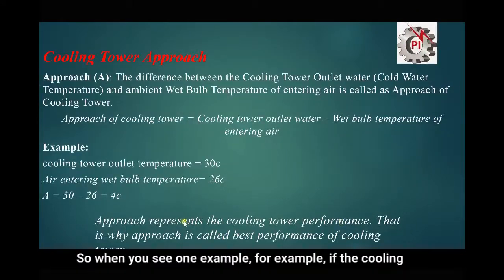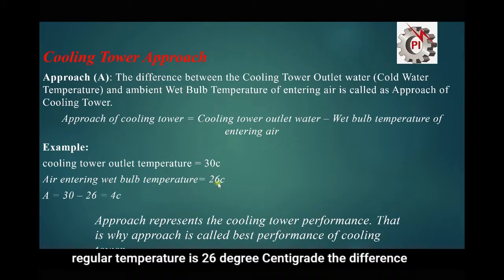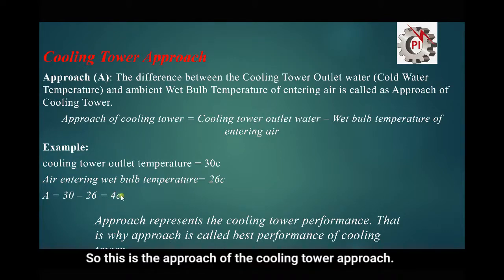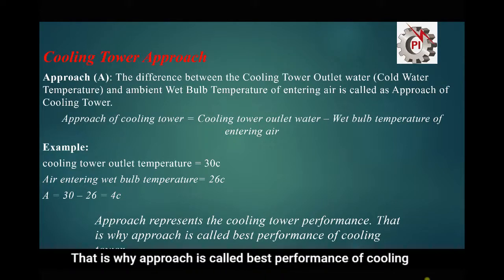For example, if the cooling water outlet temperature is 30°C and the entering air wet bulb temperature is 26°C, the difference is 4°C — so this 4°C is the approach of the cooling tower. The approach represents the cooling tower performance, and that is why approach is considered the best indicator of cooling tower performance.